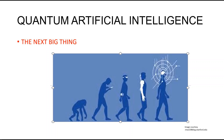Quantum artificial intelligence is an interdisciplinary field that focuses on building quantum algorithms for improving computational tasks within artificial intelligence, including subfields like machine learning. The entire concept of quantum-enhanced AI algorithms is still in the conceptual research domain. Once a stable quantum computer gets developed, expect that machine learning will exponentially accelerate, even reducing the time to solve a problem from hundreds of thousands of years to seconds.